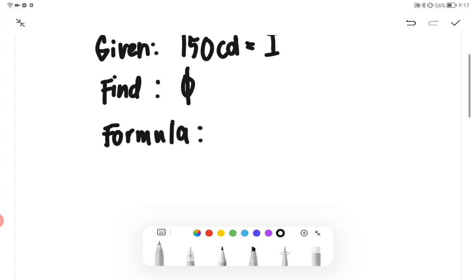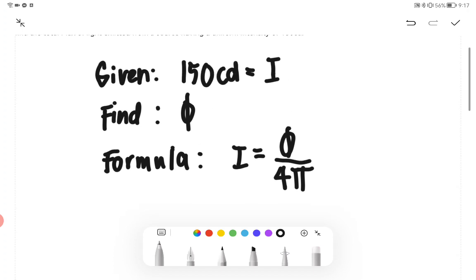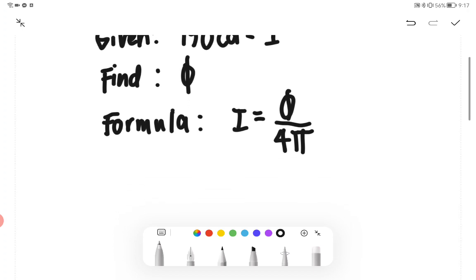Our formula here is I equals φ over 4π. We have to make sure that our φ is isolated.